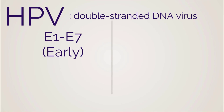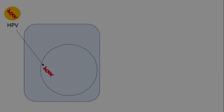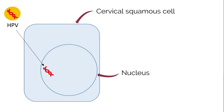There are also two late genes, L1 and L2. These proteins form the shell. Illustrated is a cervical squamous cell with the nucleus represented by a circle. Neoplastic transformation occurs when HPV integrates into the genome. Viral integration of HPV disrupts the E1, E2 open reading frames, and there is loss of transcriptional regulation of E6 and E7 proteins.